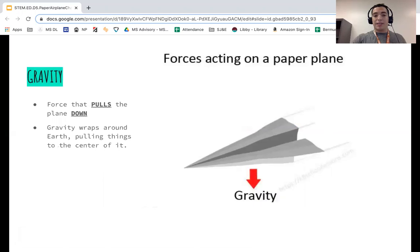Gravity, this is the force, this is the pull that pulls the plane down. Gravity is all around Earth. So it's what keeps you from floating into space. You jump. Guess what? You're going to come back down because gravity keeps pulling you down. Just remember that pulls you down towards the Earth, towards the ground.